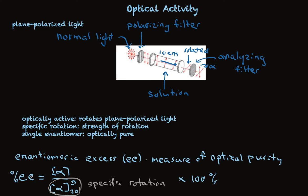Now one last thing. Rotation can be either to the right or to the left. And one enantiomer will do one, and one enantiomer will do the other, in equal strengths.